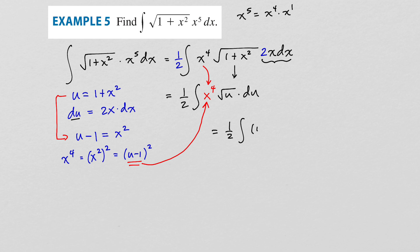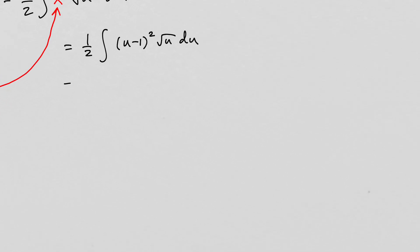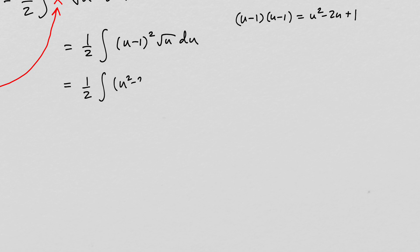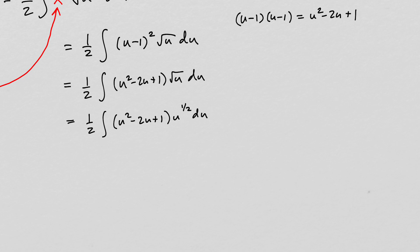Making that replacement, we have one-half integral of u minus 1 squared times the square root of u du. To complete this integral, we multiply out u minus 1 times u minus 1 to get u squared minus 2u plus 1, and then multiply by radical u. It's best to think of radical u as u to the 1 half.